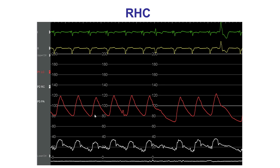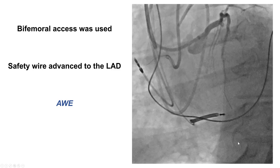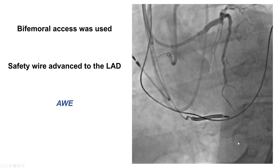Given the patient's low ejection fraction, a right heart catheterization was done before the beginning of the procedure. Because the PA pressure was within normal limits, no hemodynamic support was used.